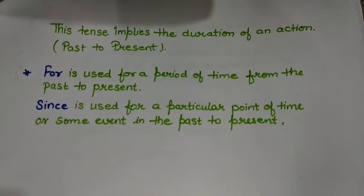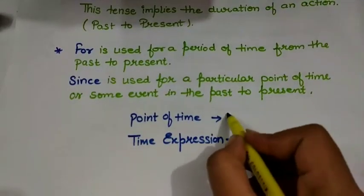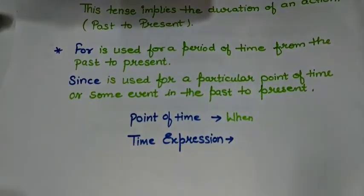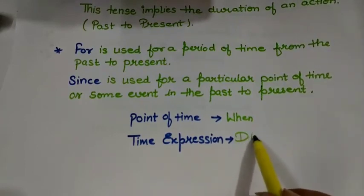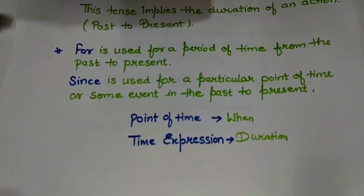Please don't get confused between time expression and point of time — they are quite different. Point of time shows when the action took place, so it is related to 'when.' Time expression tells us the duration of the action. When we use a point of time with present perfect tense, it actually becomes simple past tense. We will discuss point of time further when we study simple past tense.